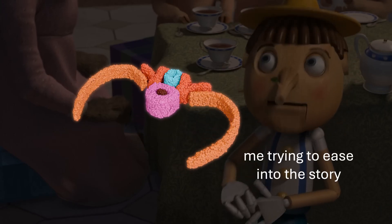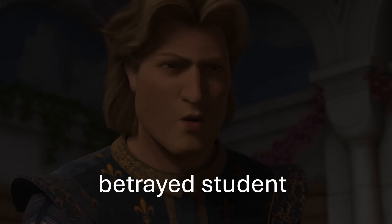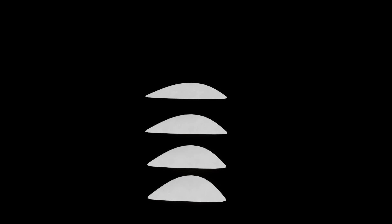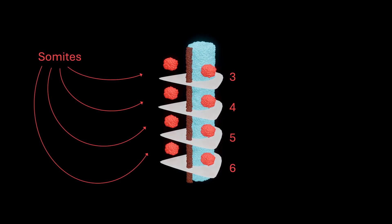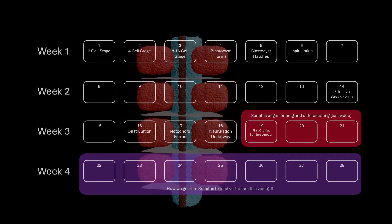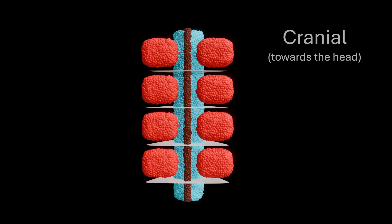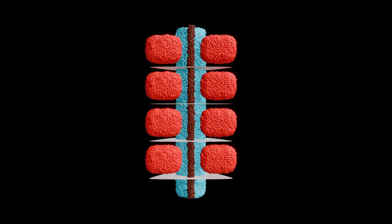Back to the notochord — the thoracic vertebrae and rib animation from earlier looked slick, but it did gloss over a few steps. So let's zoom in and do this properly from the sclerotome's point of view across a few somites. We have our notochord in the middle, somite pairs three through six on either side. Timeline-wise, this puts us at about the middle of the fourth week of embryonic development. Cranial is toward the head, caudal toward the tail.